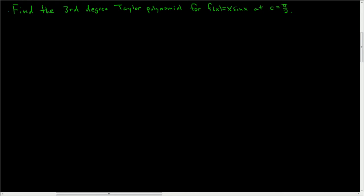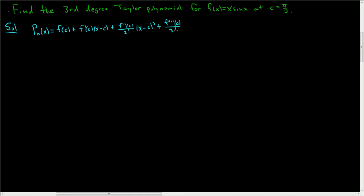We're being asked to find the third degree Taylor polynomial for f of x equals x times sine x, centered at pi over 2. The general formula for an nth degree Taylor polynomial is: f of c plus f prime of c times x minus c, plus f double prime of c over 2 factorial times x minus c squared, plus f triple prime of c over 3 factorial times x minus c cubed, and so on up to the nth term. We want the third degree, so we go all the way to 3.